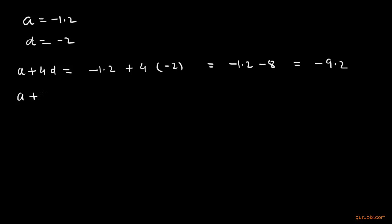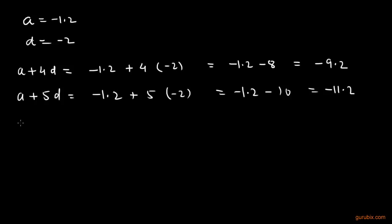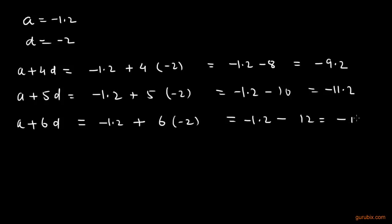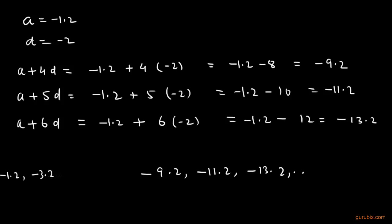The sixth term is a plus 5d, and a is minus 1.2 plus 5 into minus 2, so we get minus 1.2 minus 10, which equals minus 11.2. The seventh term is a plus 6d, and a is minus 1.2 plus 6 into minus 2, so we get minus 1.2 minus 12, which equals minus 13.2. So the next three terms are minus 9.2, minus 11.2, and minus 13.2. This is the solution of the question. Thank you.